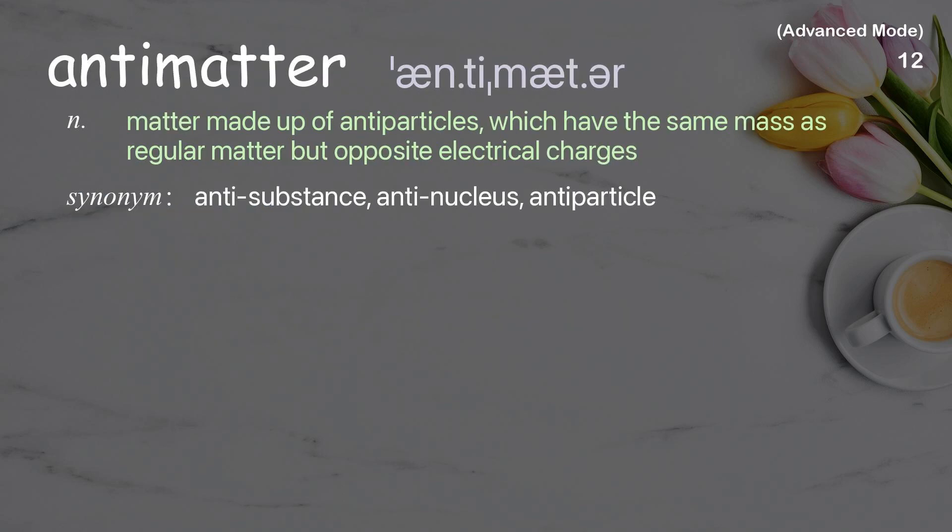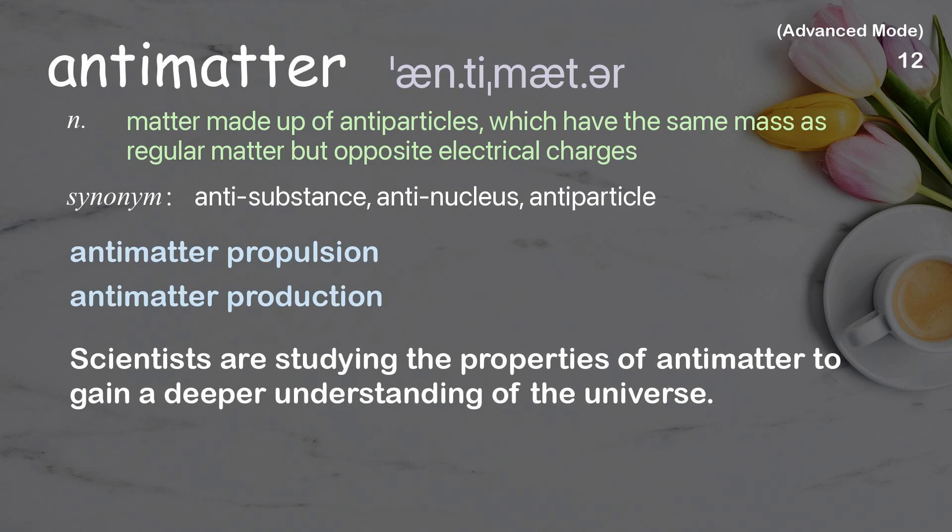Antimatter: Matter made up of antiparticles, which have the same mass as regular matter but opposite electrical charges. Examples: antimatter propulsion, antimatter production. Scientists are studying the properties of antimatter to gain a deeper understanding of the universe.